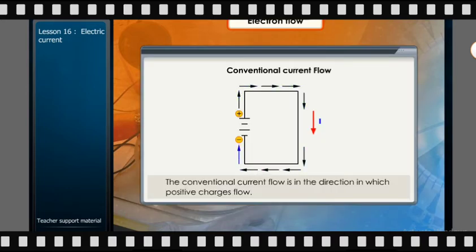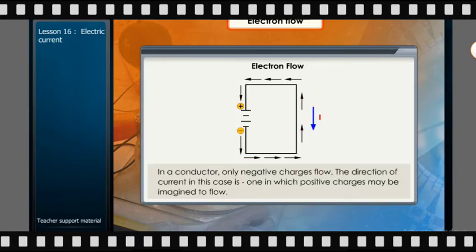The conventional current flow is in the direction in which positive charges flow. In the conductor, only negative charges flow. The direction of current in this case is one in which positive charges may be imagined to flow.